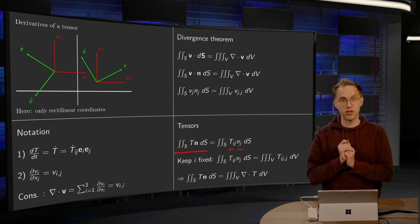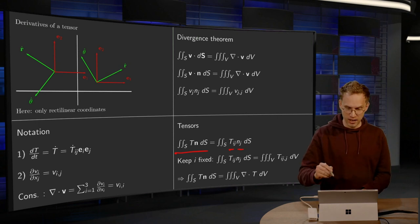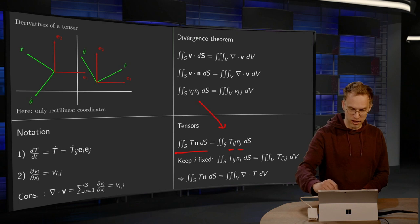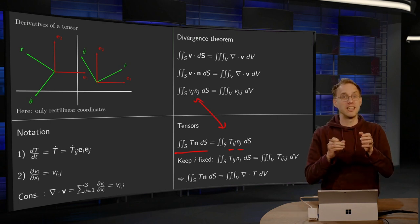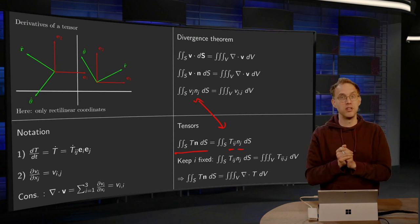So we have the integral over the surface T_ij n_j. And then note the similarity over here. So what can you do? Well, you can essentially keep the i fixed for a moment and then use the divergence theorem as normal.